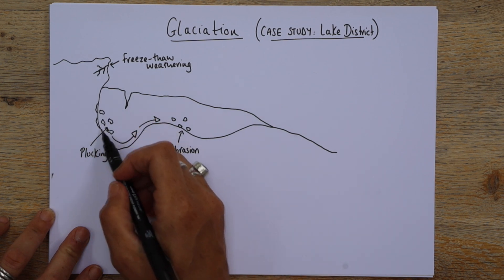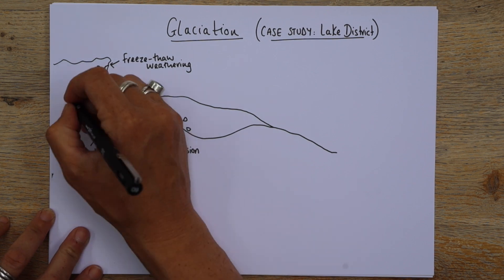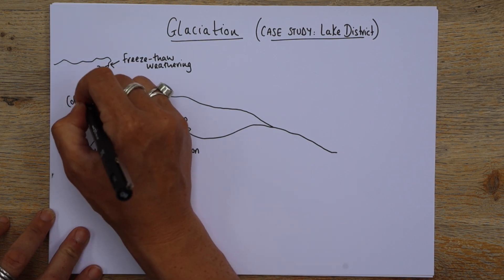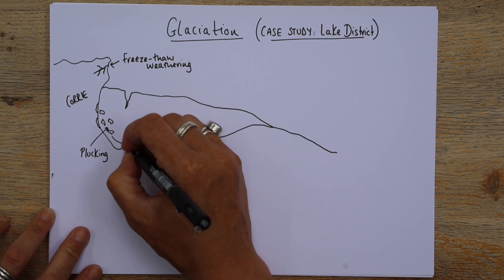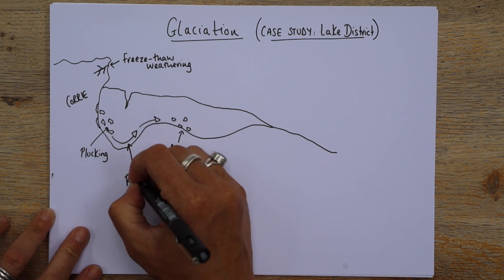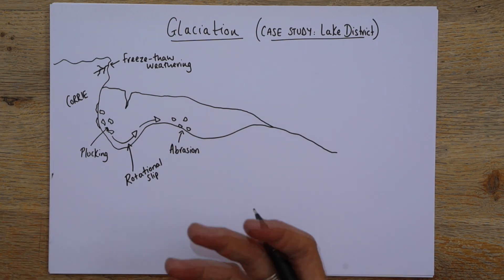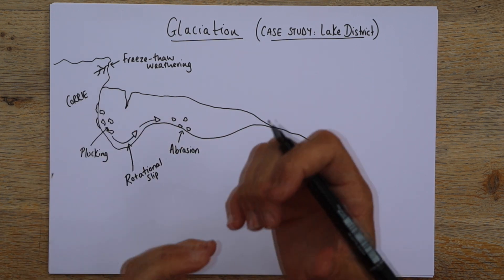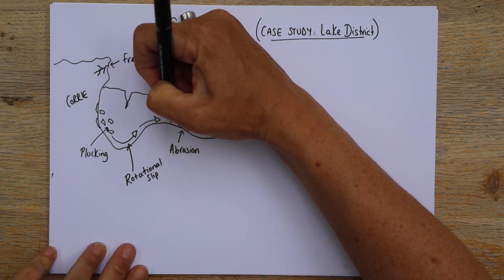Now this movement that we discussed there about it moving out of this hollow, okay, this Cori, I should just put Cori there, this Cori hollow, that is known as rotational slip. Okay, rotational slip. Now that's a circular movement as the glacier moves out of this hollow and up and over to here.